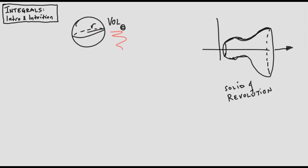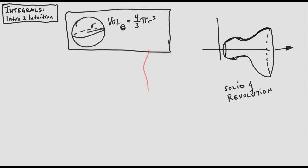The volume of a sphere is four-thirds pi r cubed. Obviously it's going to have r cubed because it's about volume, and r is the only thing that determines the size. Obviously pi is in there because this is as circular a thing as you could hope for in three dimensions. The only mysterious part is the four-thirds—and we will see where that comes from. For now, let's set up an integral to represent that volume.